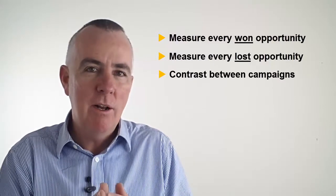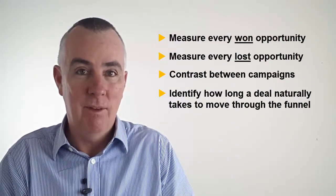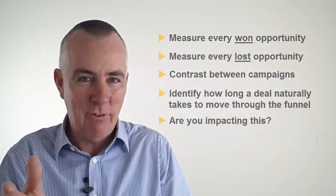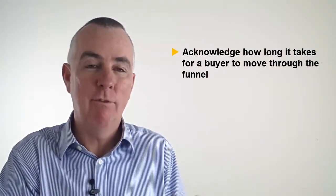Work out how long a deal naturally takes to move through the funnel. Identify whether you're actually impacting that. Remember my lag buster story where I was explaining that the vendor was actually causing or forcing the prospect to slow right down because they had this kind of two part risk. So work out whether you're actually the reason why it's changed. Other than that just acknowledge how long it takes by measuring that from your CRM.